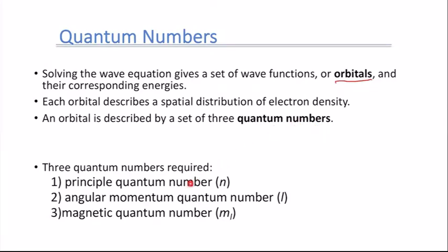Those three quantum numbers are the principal quantum number N, the angular momentum quantum number L, and the magnetic quantum number M sub L. We've already seen the principal quantum number N before — that's the different energy levels we looked at when examining the Bohr model.